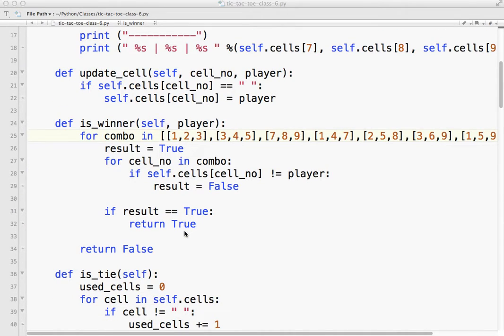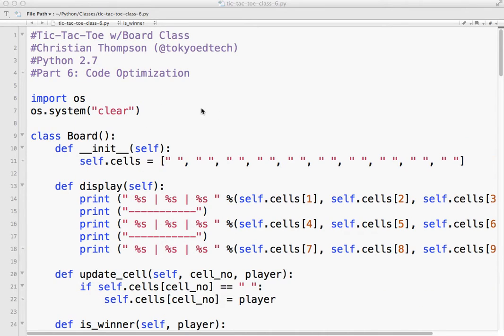Now one thing that makes this nice is let's say we decided to change our game and made it a, you know, 4 by 4, so it was a much larger set of possibilities. We could easily update this rather than having to put a bunch more if-then statements. So that is just one way of doing it. There's other ways I'm sure that would be more optimized, but that one hopefully is simple to understand. So give it a shot.